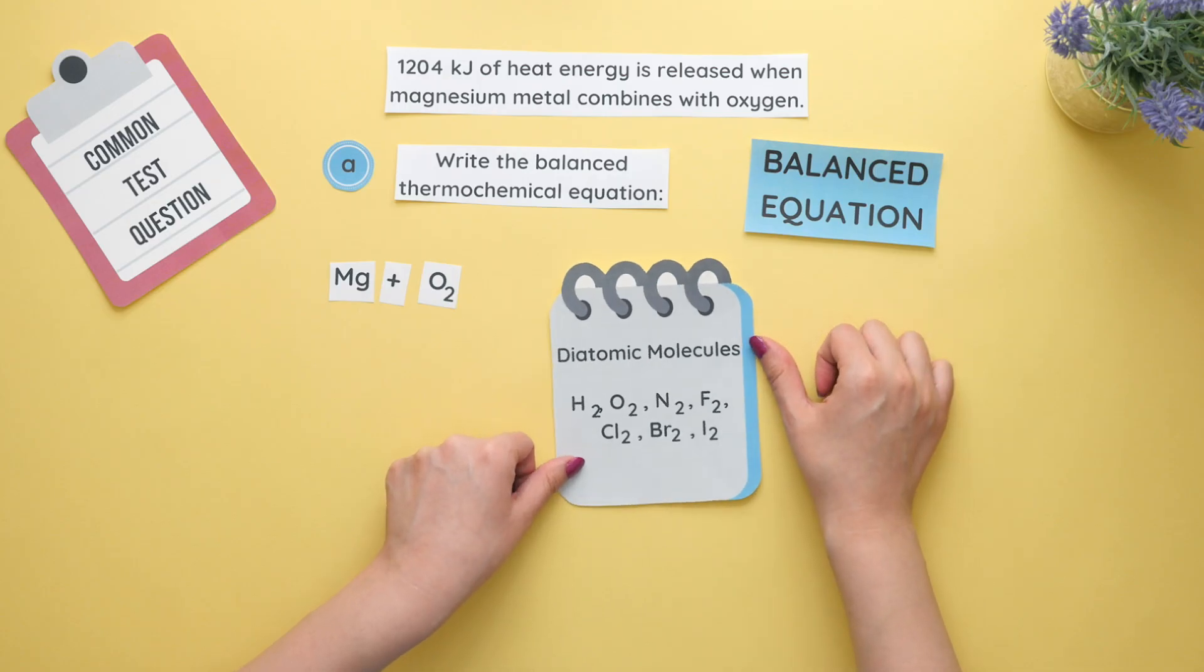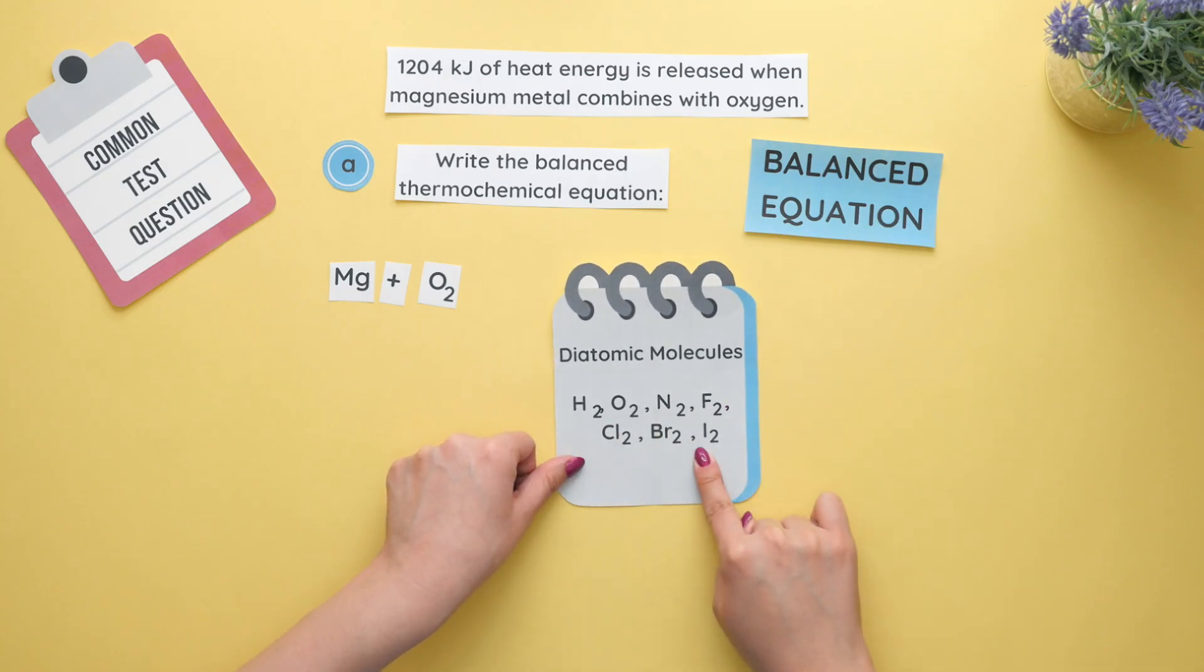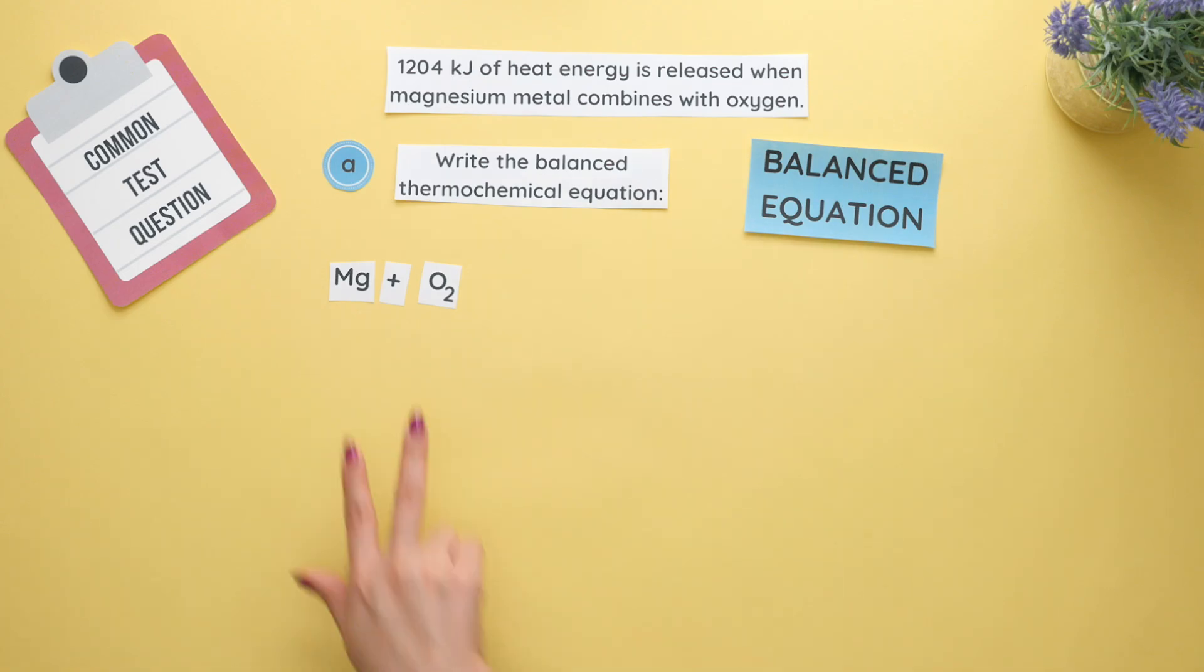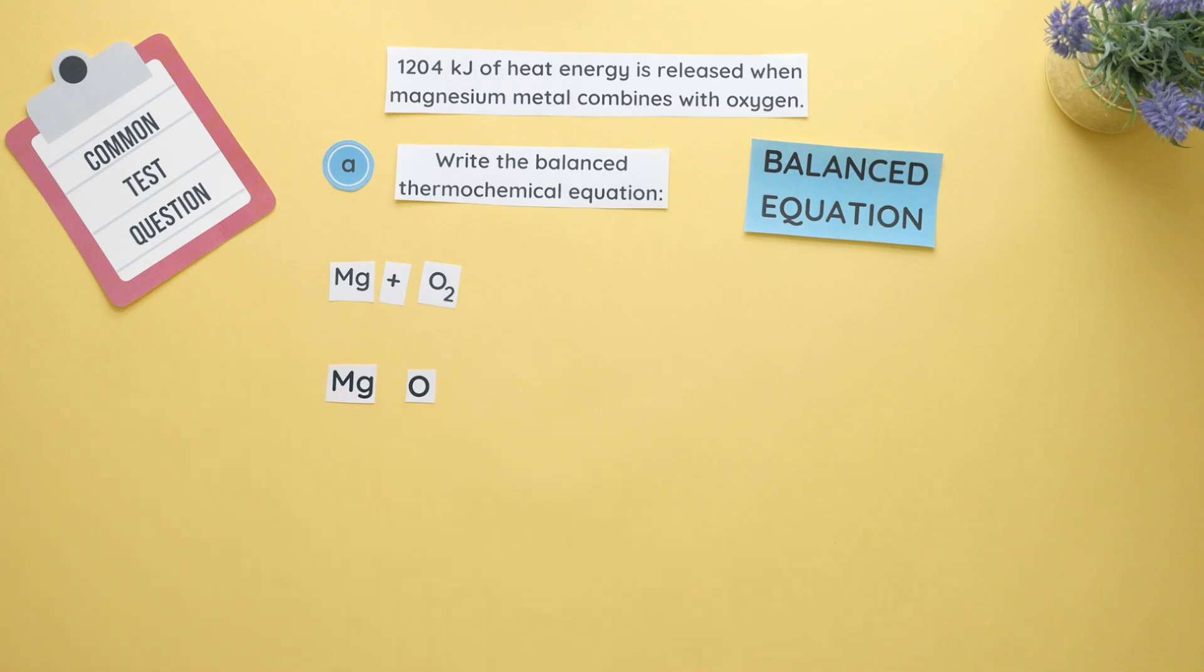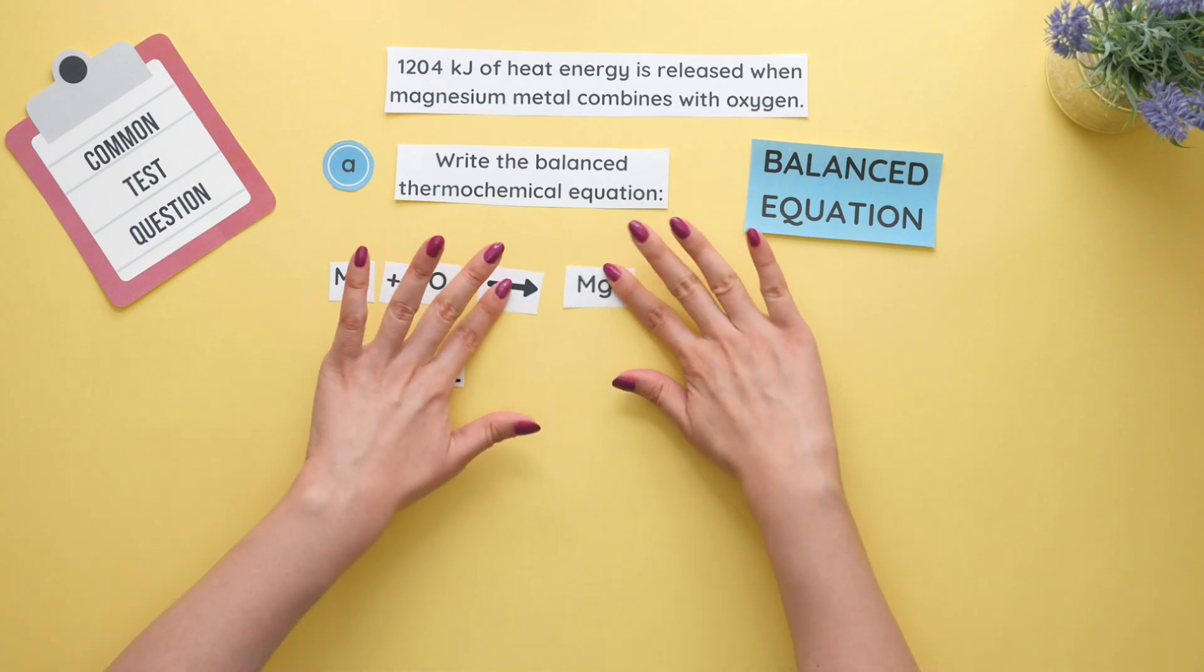Diatomic molecules are atoms that exist in pairs. When we combine magnesium and oxygen together we are only looking at one oxygen so ignore the subscript of two and we will identify our charges. Magnesium has a plus two charge and oxygen has a negative two charge. Since the charges are the same number and opposite signs we do not need any subscripts so our product is magnesium oxide.